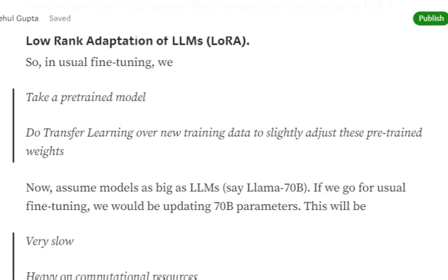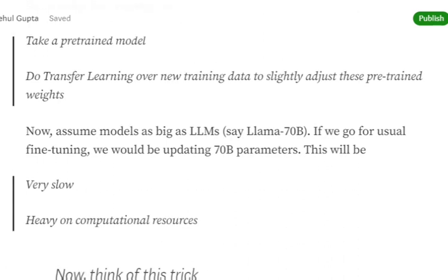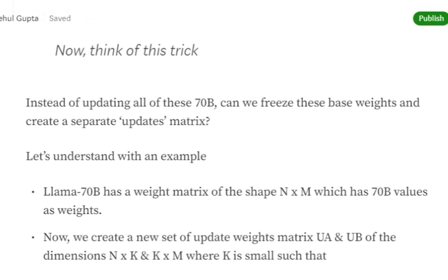Now, if we talk about LLMs like Llama 70B, if we go for usual fine-tuning, we would be updating 70 billion parameters. This would be very slow and also require huge computational resources.